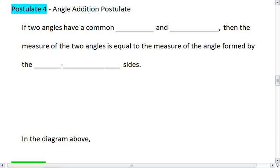Postulate 4 is the angle addition postulate. This postulate tells us that if two angles have a common side and vertex, then the measures of the two angles is equal to the measure of the angle formed by the non-shared sides.